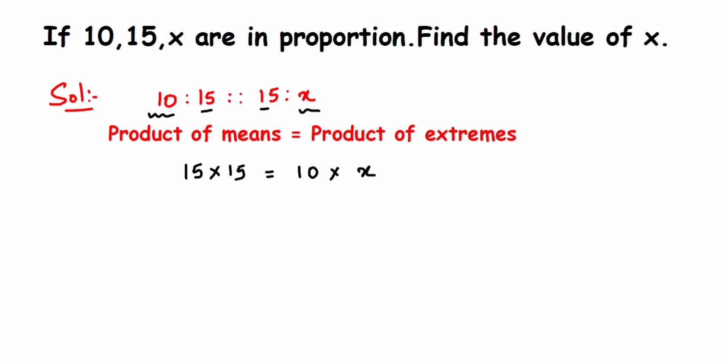We want only the value of x, so we transpose the 10 to the other side. 10 is in multiplication with x; when you transpose it, it comes in division. So 225 upon 10 equals x. We're going to get the answer in decimal.